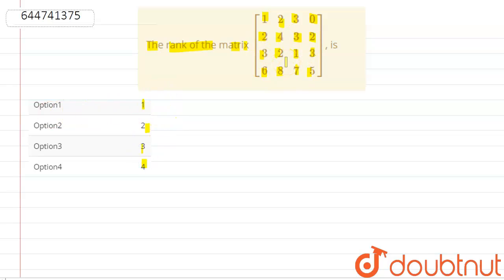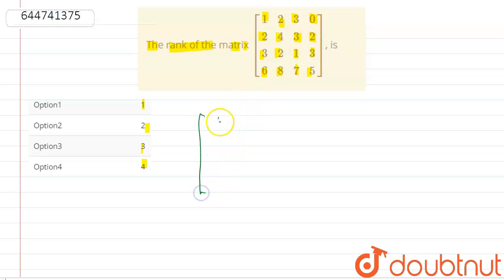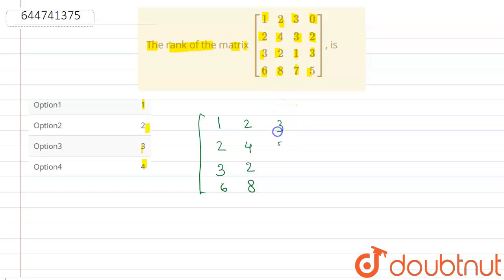We know that the rank of a matrix is the maximum number of its linearly independent columns or rows. So we have to find the linearly independent columns or rows. Let us start the solution. The matrix is: [1, 2, 3, 0; 2, 4, 3, 2; 3, 2, 1, 3; 6, 8, 7, 5].